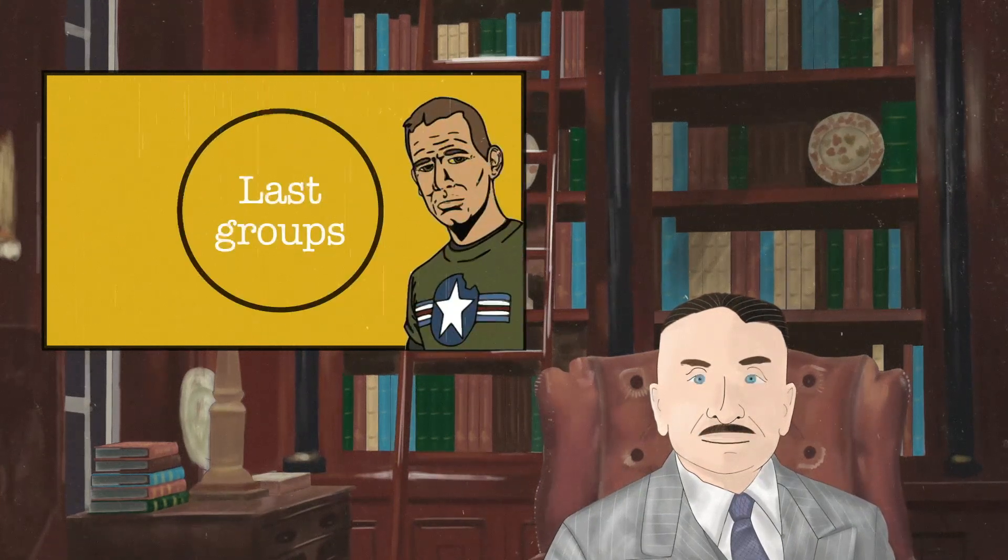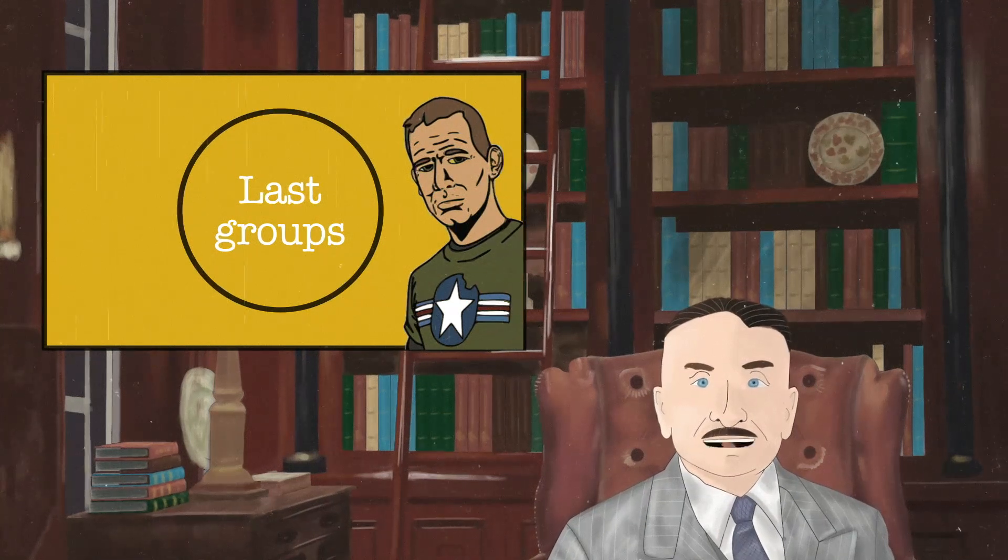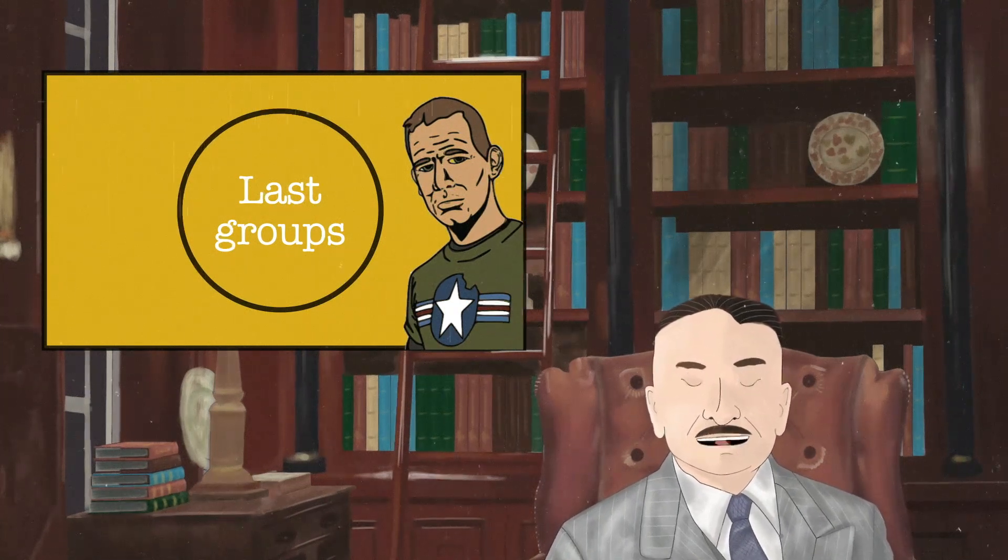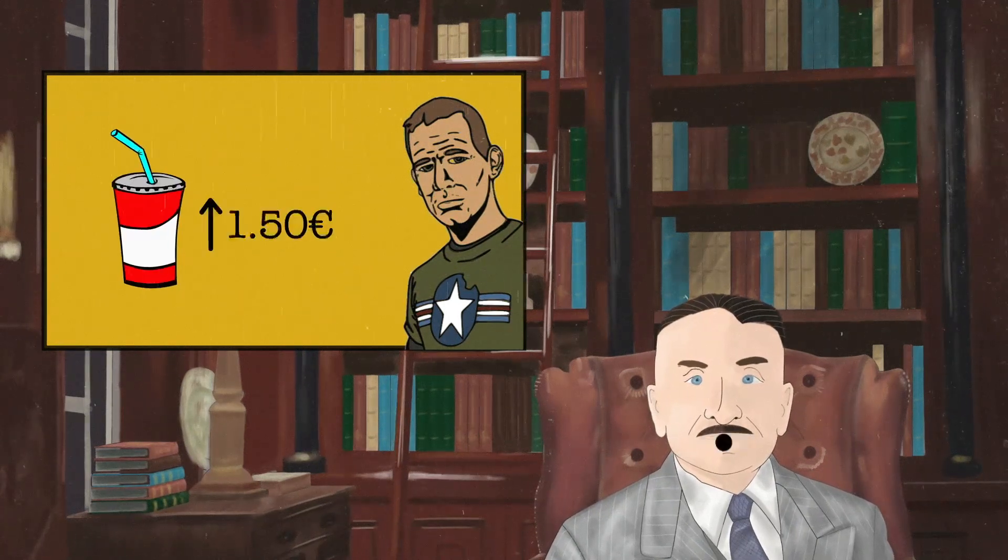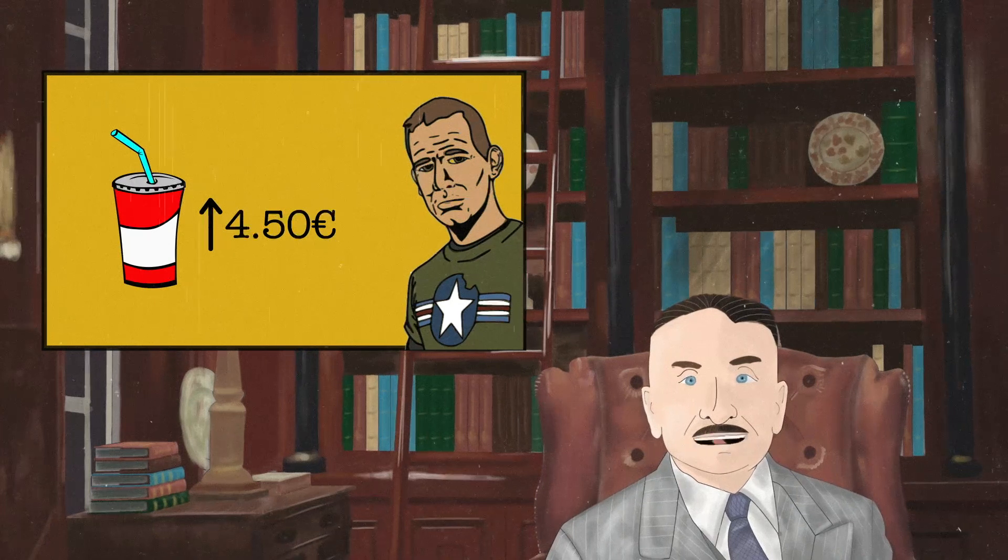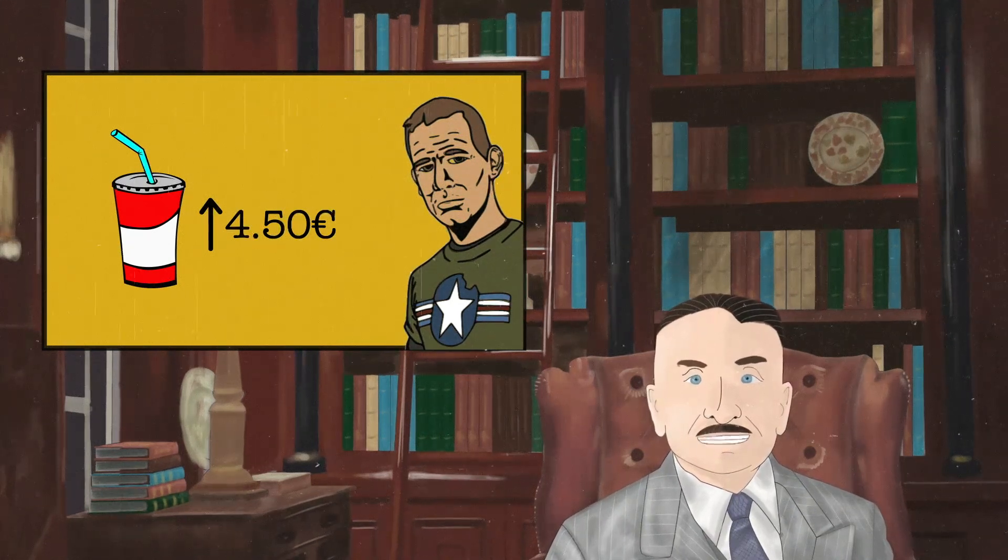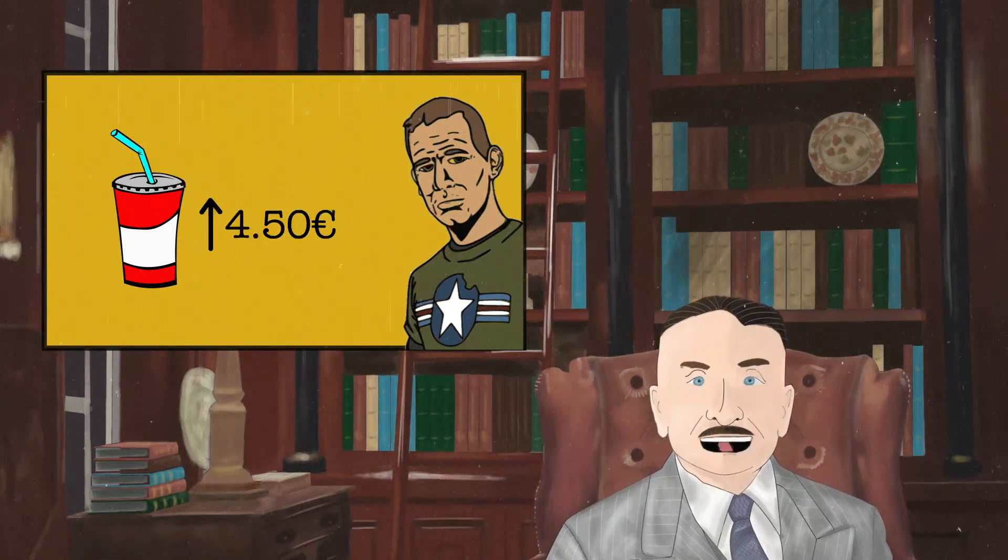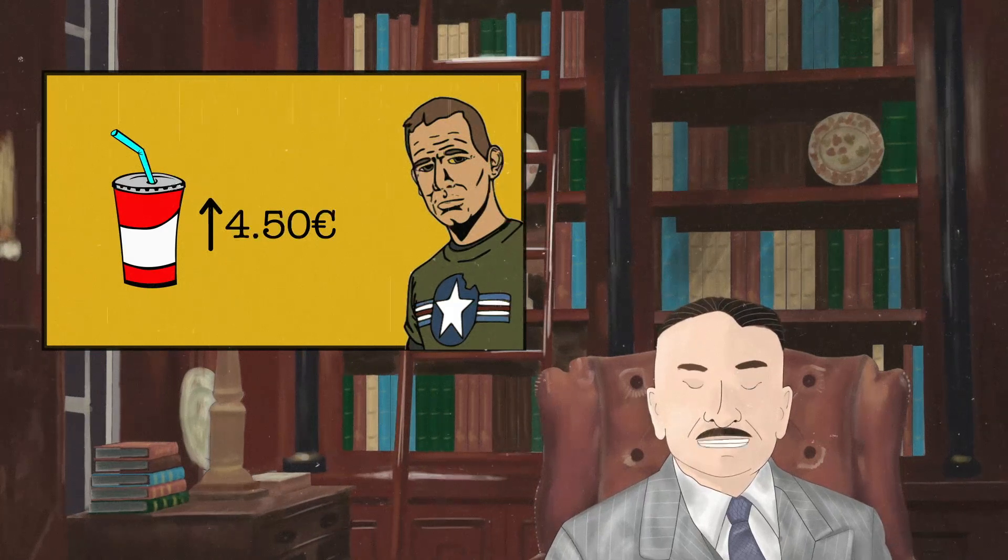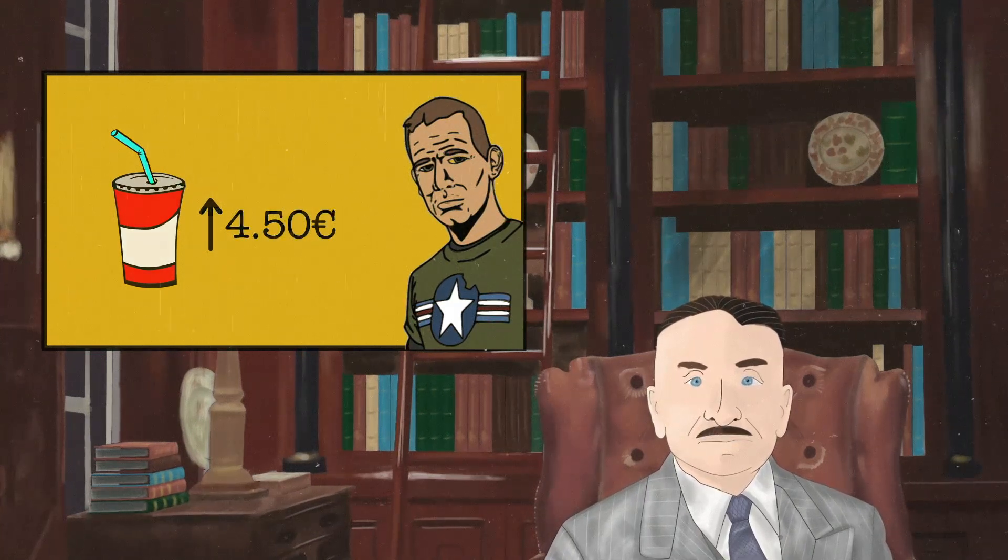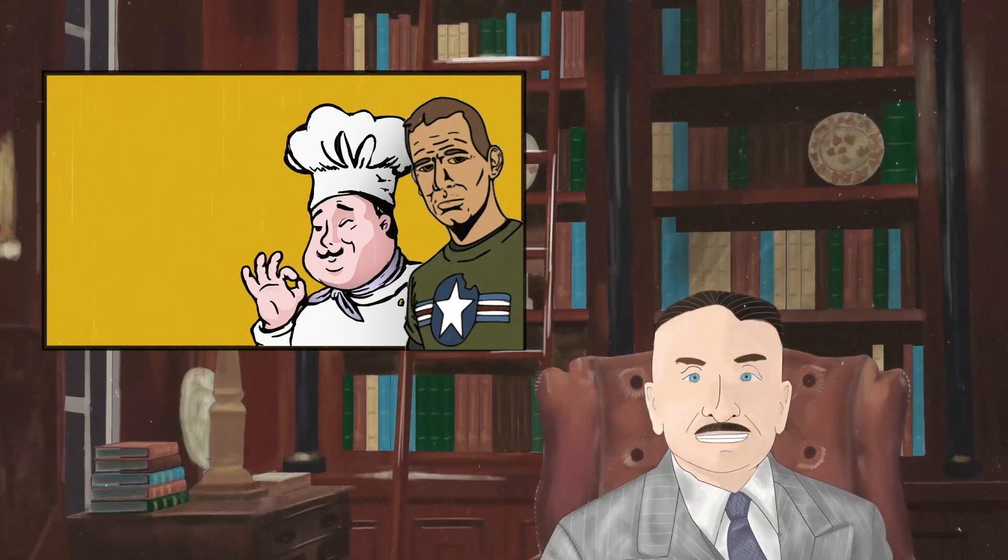But there are other groups of the population for whom this money arrives much later. These people find themselves in an unfavourable situation. Before they have access to the additional money, prices have already risen and they are obliged to pay higher prices than previously for some commodities they wish to acquire, or practically all of them, while their earnings remain the same, or do not increase proportionally to the prices.